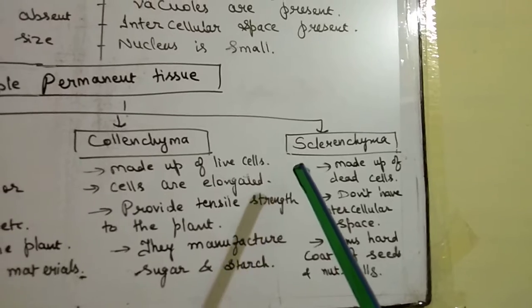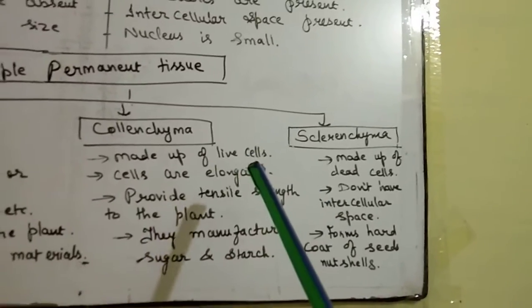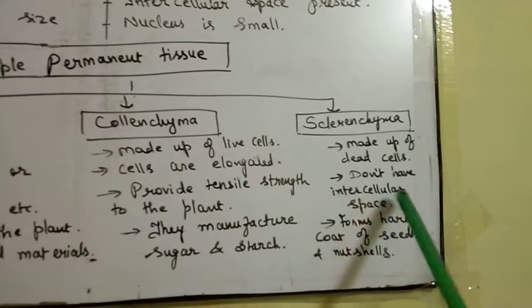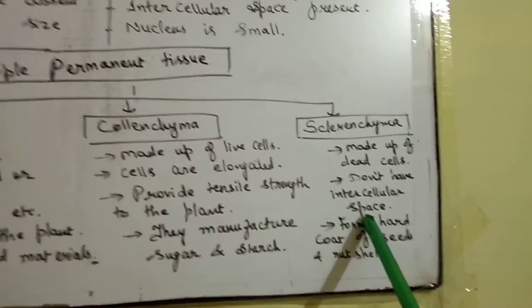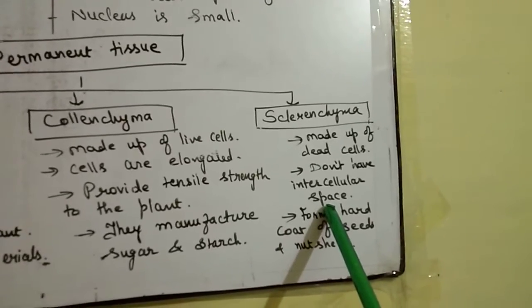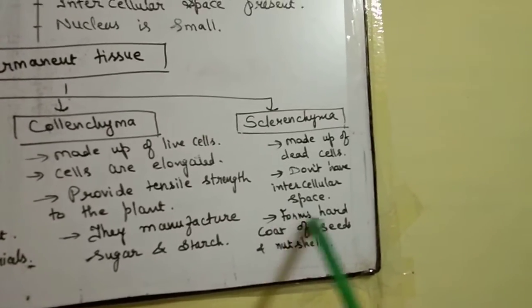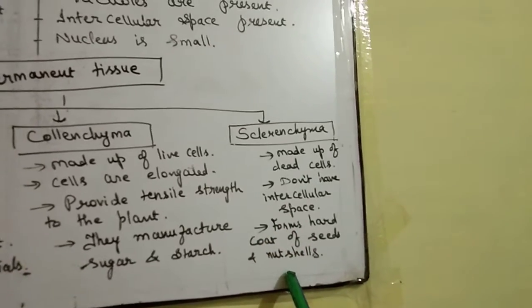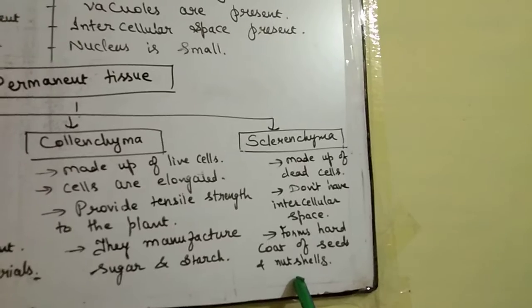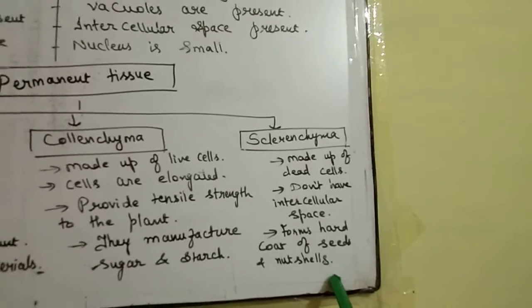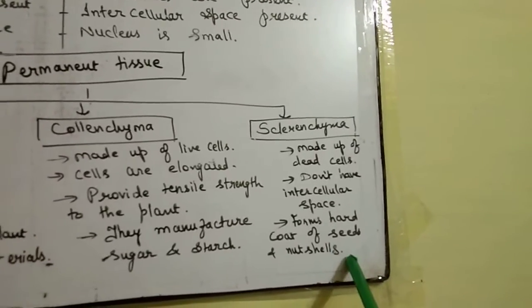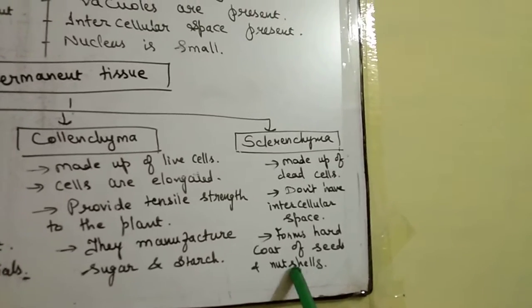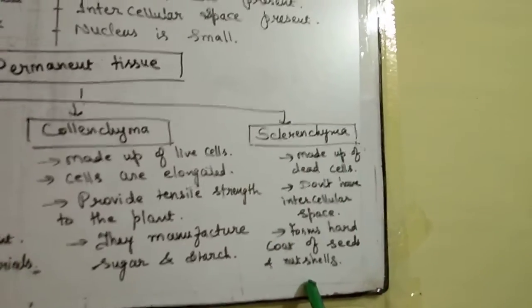Even though the cells are dead, they are still present because they provide strength to the plant. Sclerenchyma cells do not have intercellular space — they are tightly packed. They form the coat of seeds and nut shells. This can be asked in objective type questions: which type of tissue is present in a nut shell? Also, the husk of a coconut is made up of sclerenchymatous tissue.